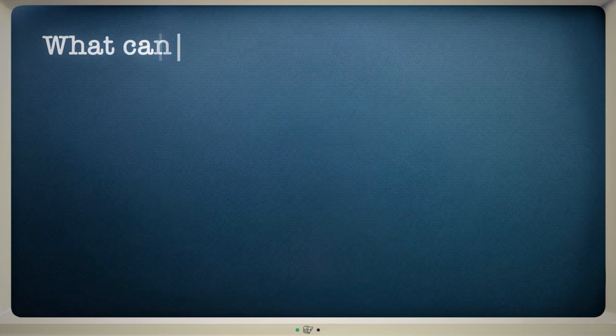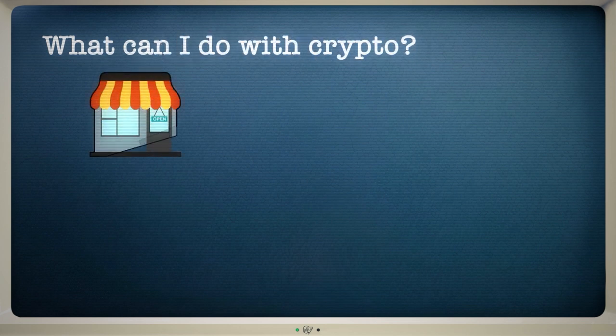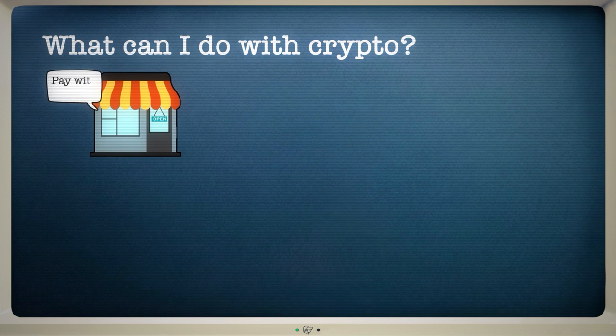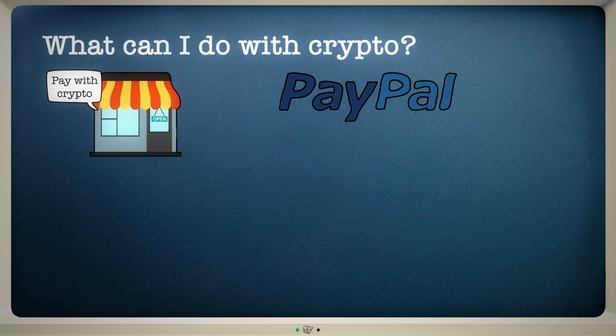Now, you may be wondering, what exactly can you do with crypto? An increasing number of shops now accept cryptocurrencies as a payment method. In 2021, PayPal launched a new feature that allows users to buy things at millions of merchants using Bitcoin, Ether, Litecoin or Bitcoin Cash.